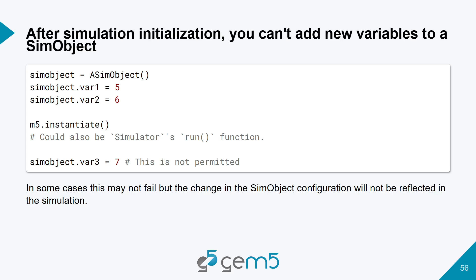When you start building simulations, you reach a point in your configuration script where you call instantiate, which puts a freeze on many changes you can make to the system. You can't arbitrarily make changes after that — for instance, you can no longer add new variables to a SimObject. As a good policy, make sure everything is done before instantiation.